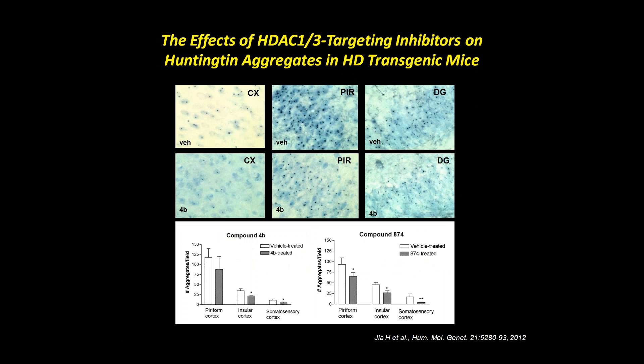Immunohistochemistry data from different brain regions of the N171 mouse model shows vehicle-treated mice with clear Huntington aggregates — those round black dots — visible in the cortex, piriform cortex, and dentate gyrus of the hippocampus. After treatment with compound 4B, these aggregates are reduced and become smaller, which we quantified in bar graphs. This confirms that drug-induced elevation of UPS gene expression leads to reduced Huntington protein aggregation.